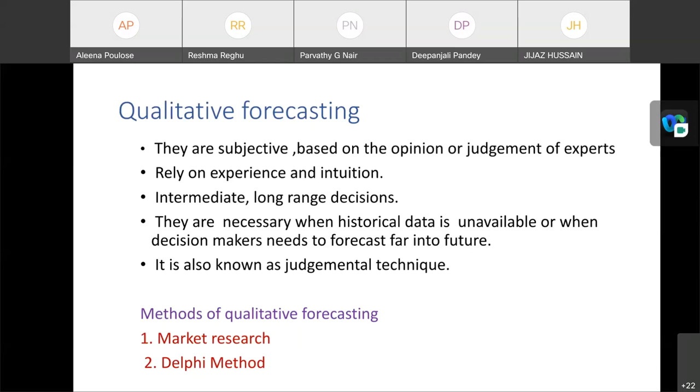For example, when a person forecasts the result or outcome of a cricket match. That is an example of qualitative method because they forecast on the basis of their opinions or personal interest. Then the methods of qualitative forecasting. There are mainly two methods of qualitative forecasting. First one is market research and second one is Delphi method.